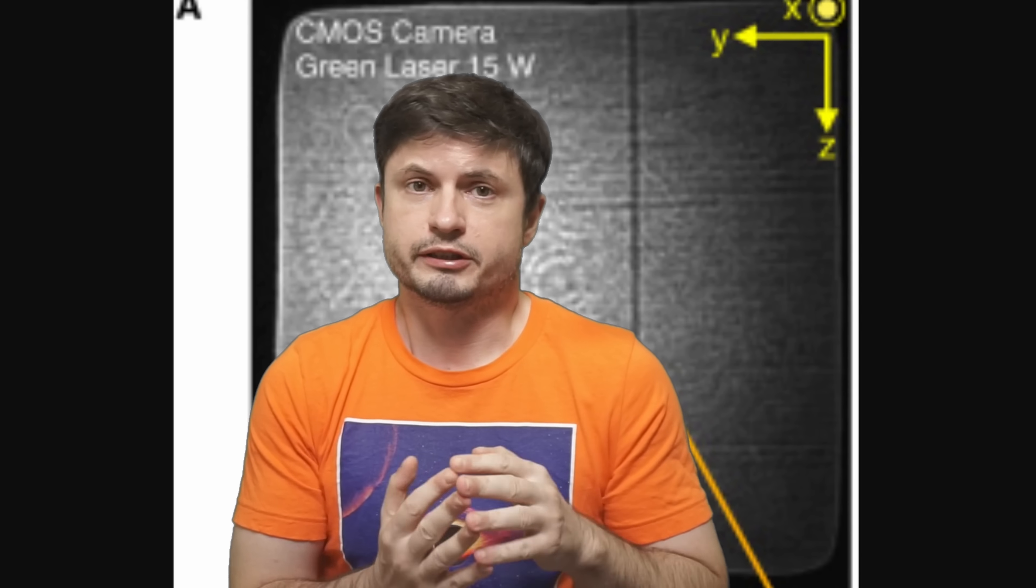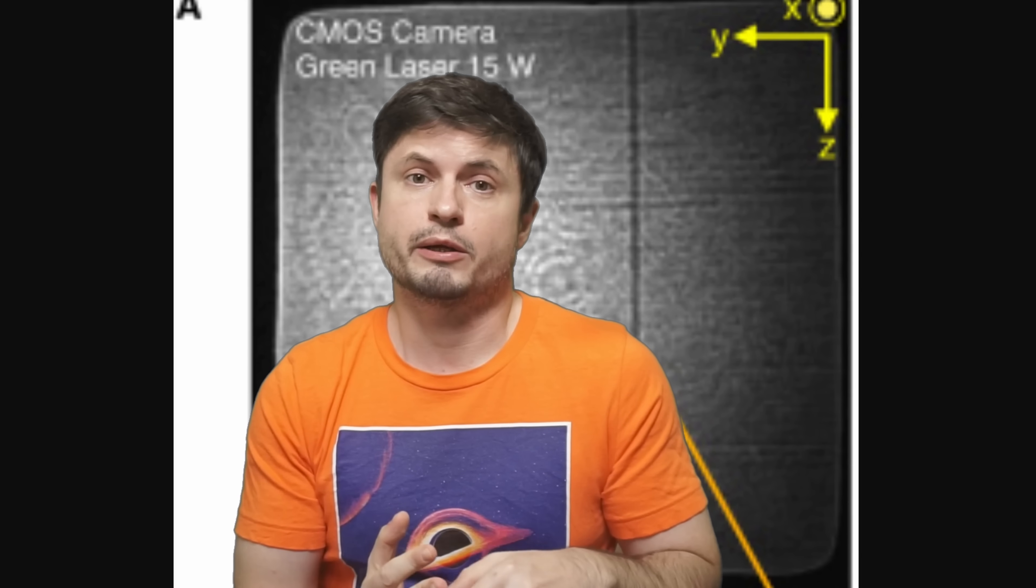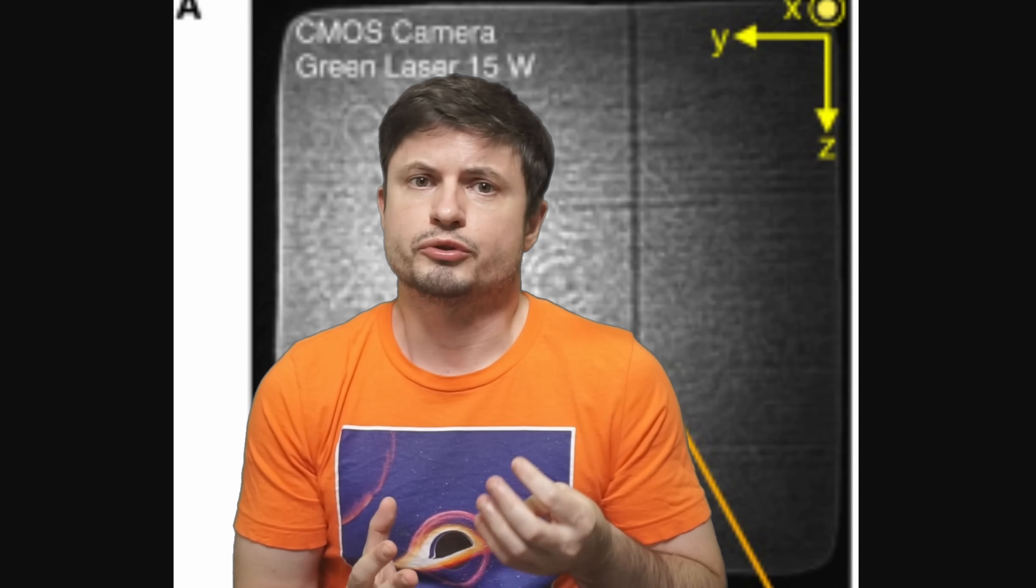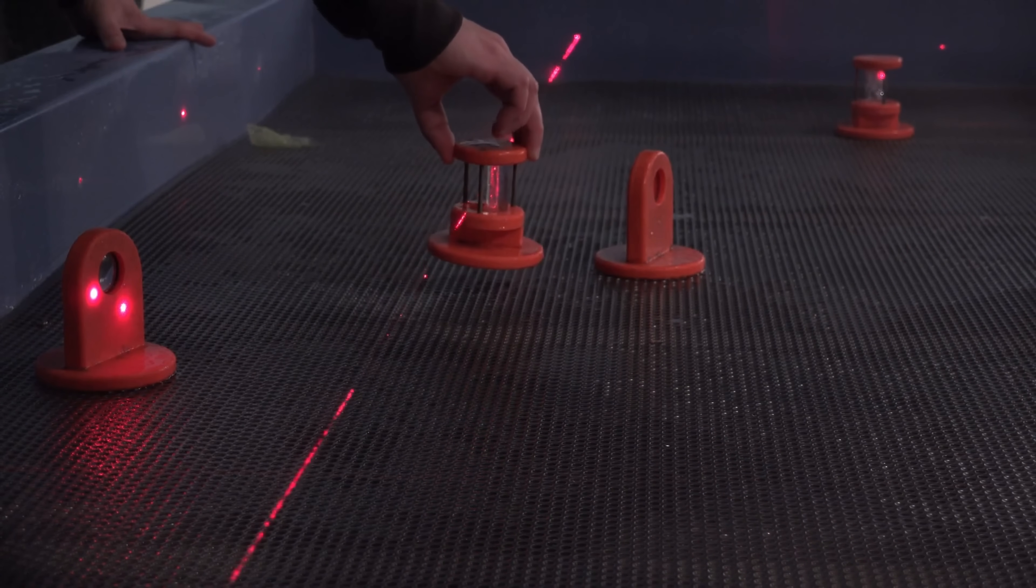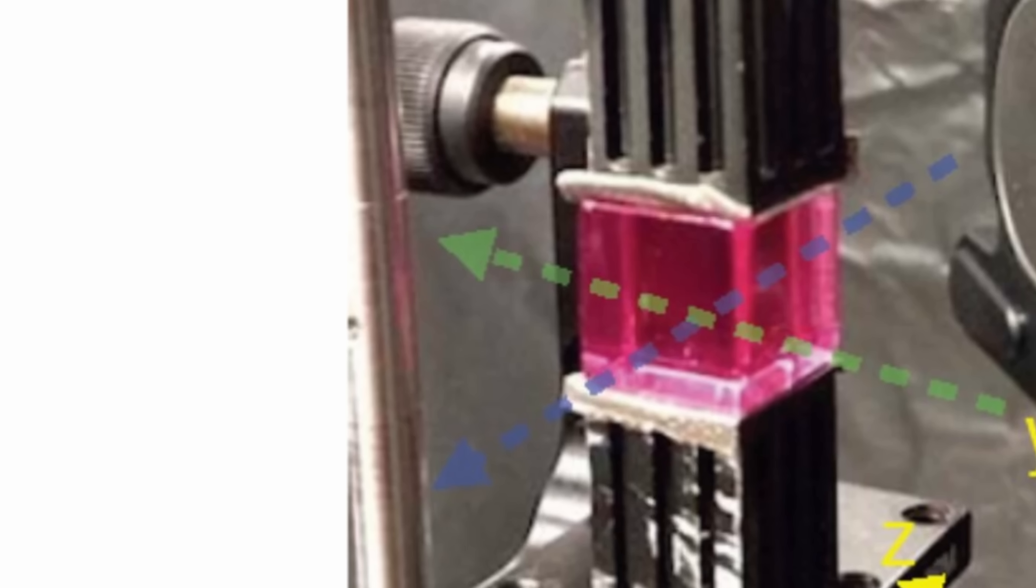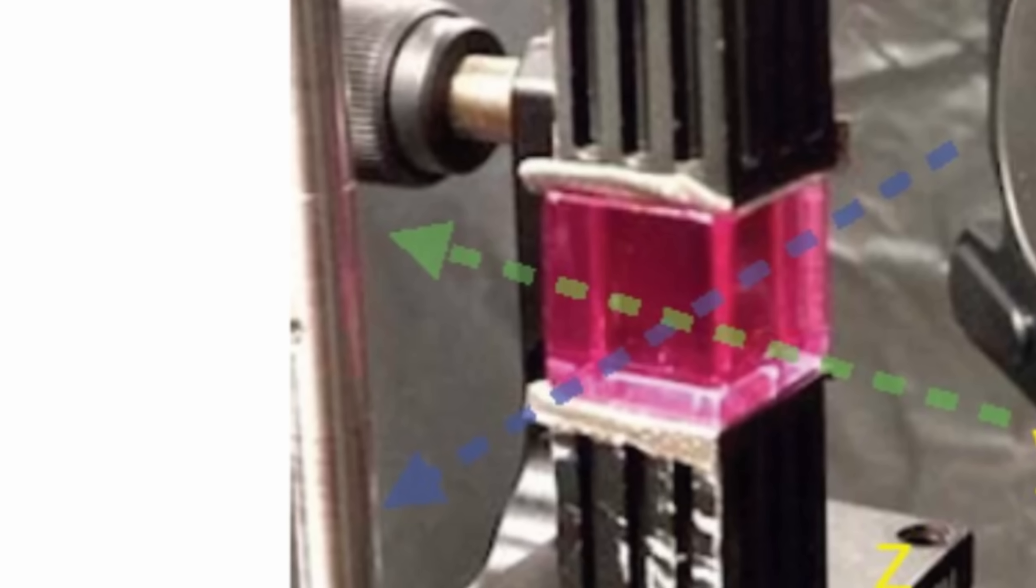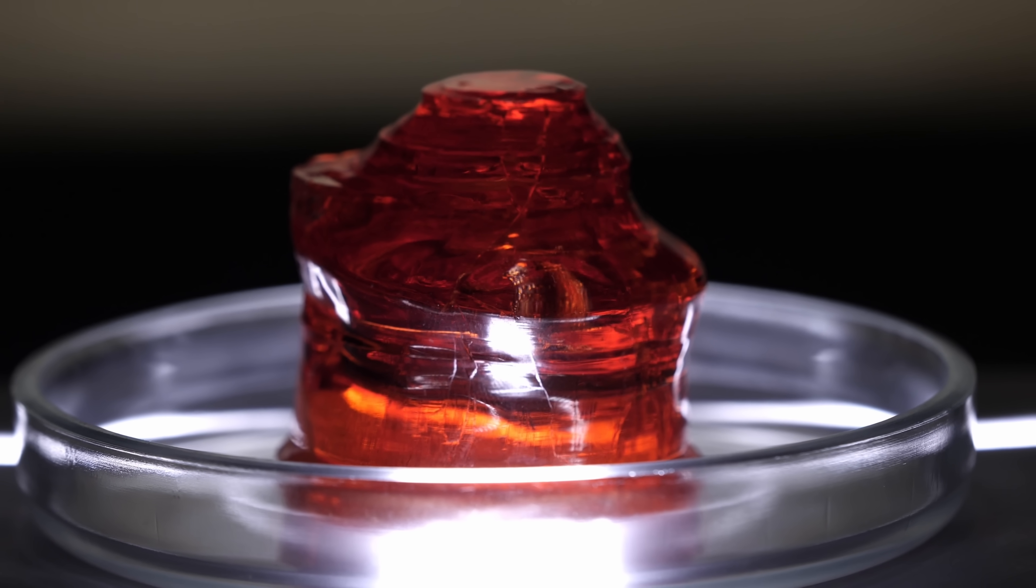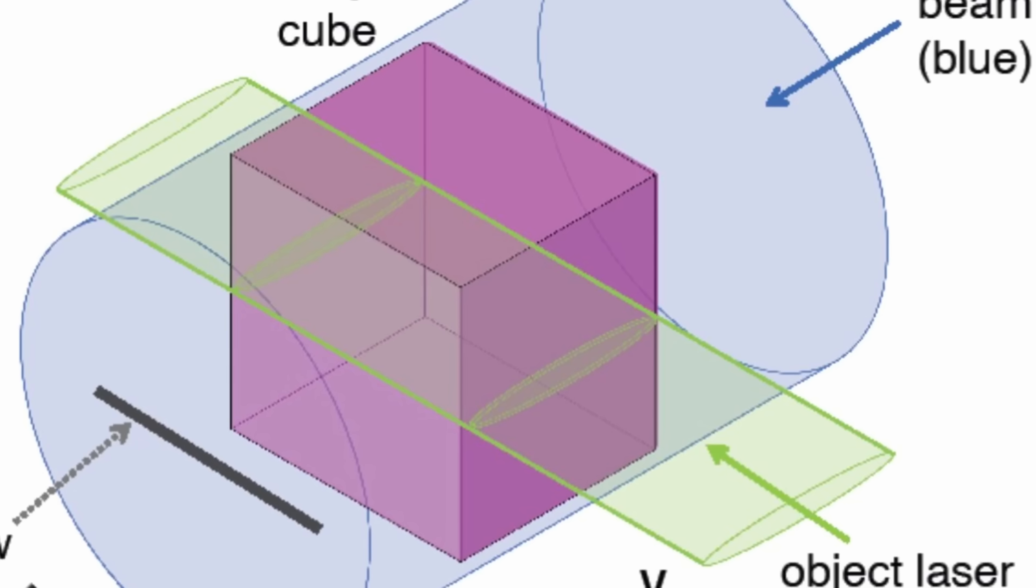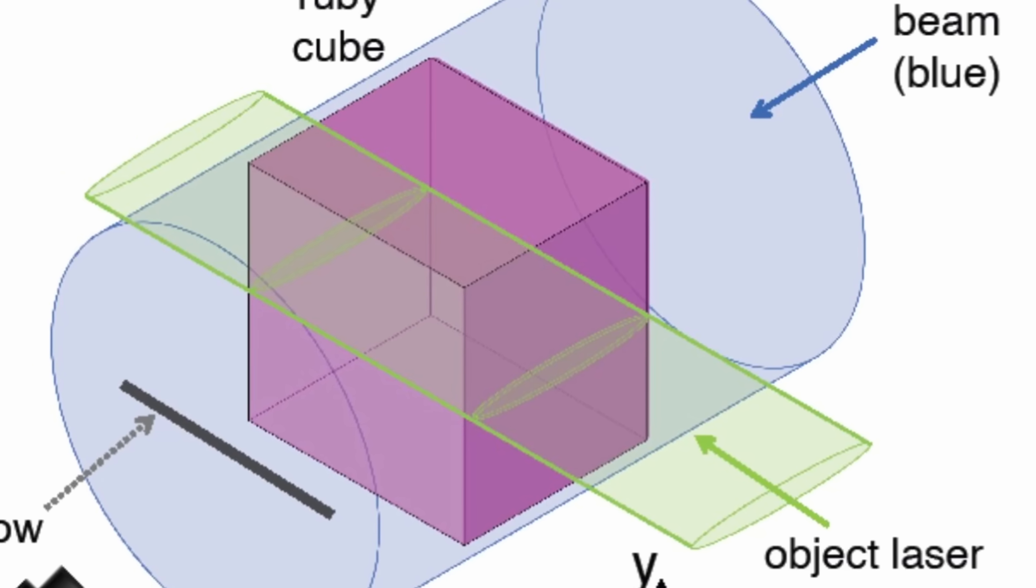While in this case, the experiment was based on some of the theoretical predictions when it comes to certain materials. And so in order to turn a laser beam into a physical opaque object, they had to rely on understanding of what certain lasers do to certain materials. And in this case, it involved a cube made of rubies. So yeah, a ruby cube, not to be confused with the Rubik's cube. And by using these ruby crystals, they created a certain type of a laser-laser interaction that can be visualized this way.